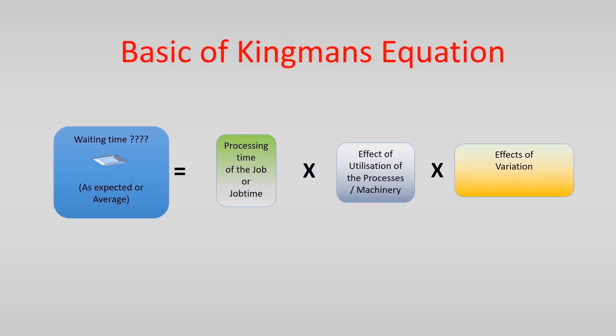Utilization is one of the three parameters in Kingman's equation. This states that the waiting time before a machine or a job is the product of the job time and the effect of the utilization and the effect of variation.